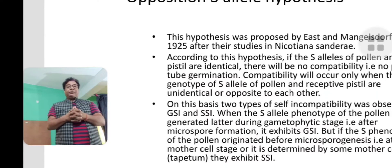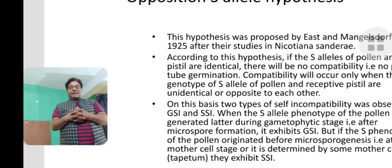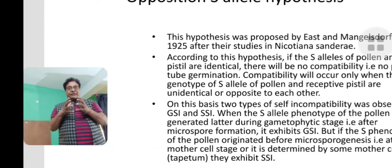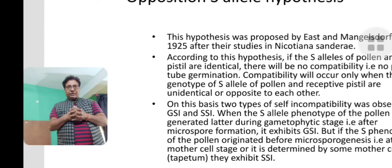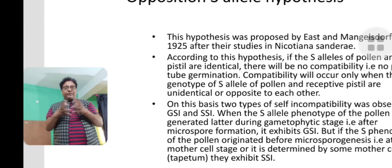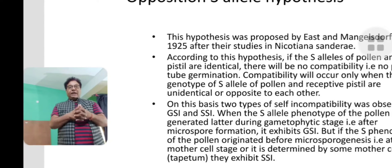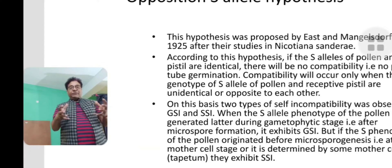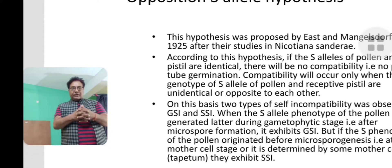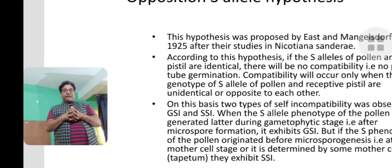The opposition S allele hypothesis was proposed by East and Mangelsdorf in 1925. According to this, if the pistillar S allele and the pollen S allele are identical, there will be no pollen tube formation. If they are different, compatibility will take place — the pollen will form a pollen tube and fertilize the egg. When the alleles are opposite to each other, fertilization occurs; otherwise it does not. This is the opposition S allele concept.